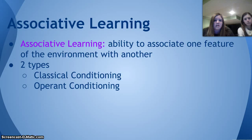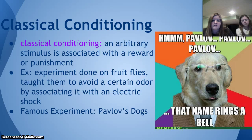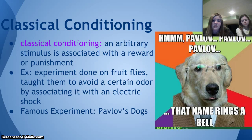Associative learning is the ability to associate one feature of the environment with another, and there are two types. Classical conditioning uses an arbitrary stimulus associated with a reward or punishment. For example, fruit flies were taught to avoid a certain odor by associating it with an electric shock. In Ivan Pavlov's famous experiment, he would bring his dogs food and ring a bell at the same time to signal that food was coming, and they would salivate. Over time, they started to salivate at the bell alone — so the bell became the stimulus responsible for salivating.